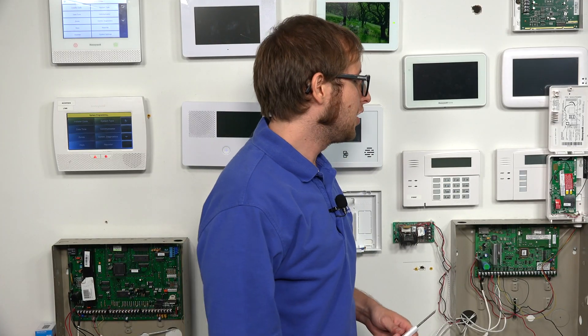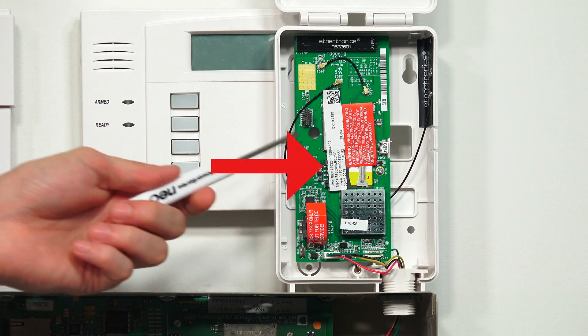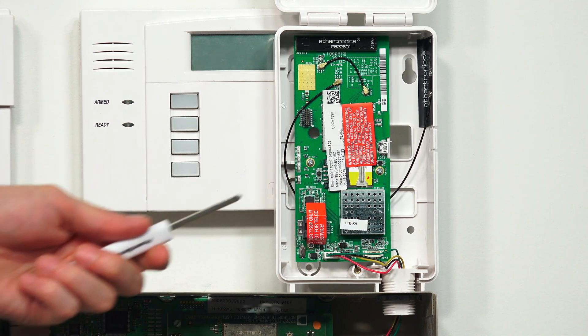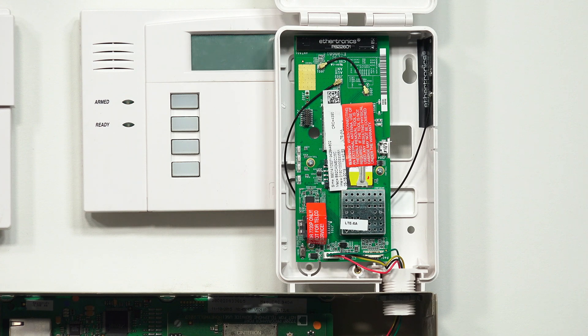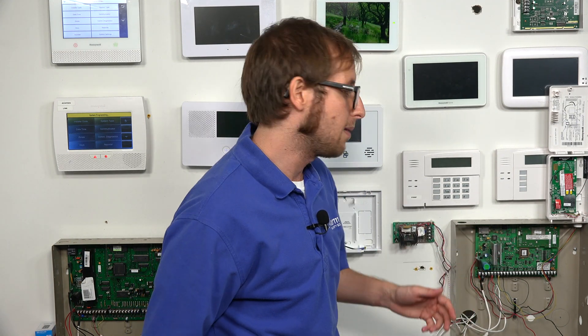One thing I do want to note before you go and close the module, make sure to write down the MAC and CRC codes on the communicator, on the sticker. Take a picture of them or write them down and keep them somewhere safe. You will need them for a monitoring service to activate the communicator. And I also want to note that this communicator will draw up to 250 milliamps of current when it's transmitting signals. So make sure to consider that into your current calculation and add an external power supply if necessary.